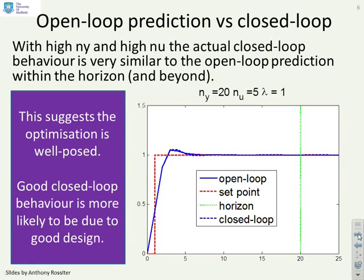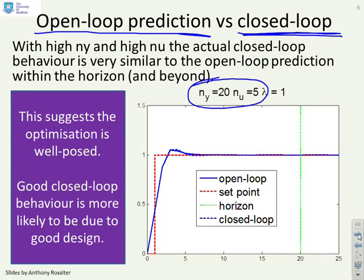Just to show you the final thing then, what we've said is one check for whether your optimisation makes sense is you overlay the optimised open loop prediction with the closed loop behaviour that results. And if the two are similar, you're confident that your optimisation made sense. If the two differ, then it means you keep changing your mind, and therefore your optimisation wasn't very well posed. And here you can see with the choice of ny equals 20 and nu equals 5, it's very difficult to spot a difference between the optimised prediction and the closed loop behaviour that has resulted. And therefore I can be confident that my optimisation is well posed and is going to give me robust and sensible results.